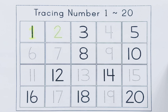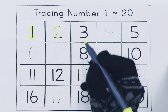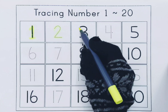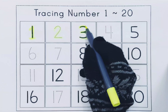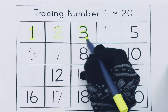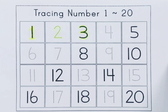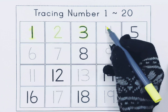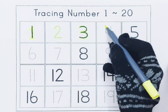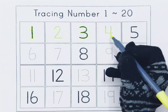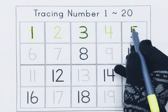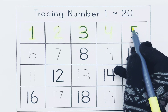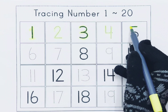This is 3 - T-H-R-E-E - 3. This is 4 - F-O-U-R - 4. This is 5 - F-I-V-E - 5.